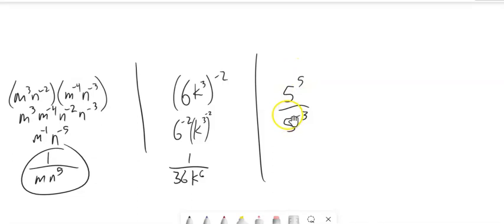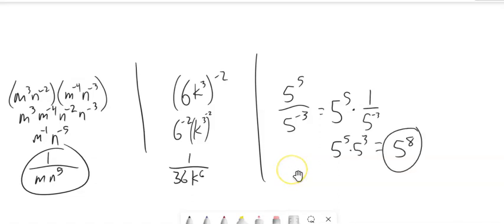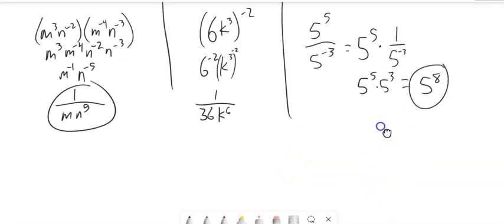And then this one, 5 to the 5th over 5 to the negative 3rd. Well, that 5 to the negative 3rd, this is the same as saying 5 to the 5th times 5 cubed, which is 5 to the 8th. If you really wanted to know what it was equal to, you could grab your calculator.